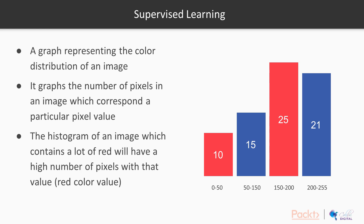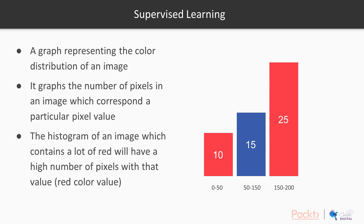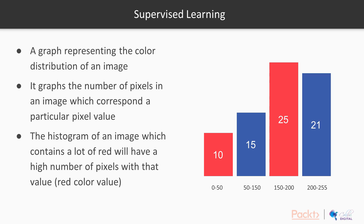Let us turn our attention to the image shown here. Assuming we have a grayscale image, if we plot a bar graph of the histogram, it might look something like this. There may be 10 pixels in the image whose values lie between the range 0 to 50. Similarly, there may be 15 pixels whose values lie in the range from 50 to 150. There may be 25 pixels in the range from 150 to 200 and around 21 pixels whose values are in the range from 200 to 255.